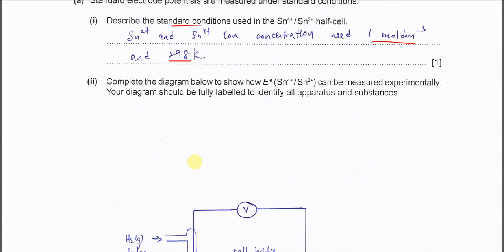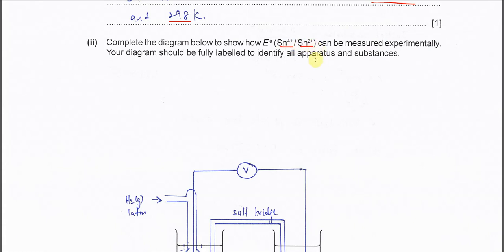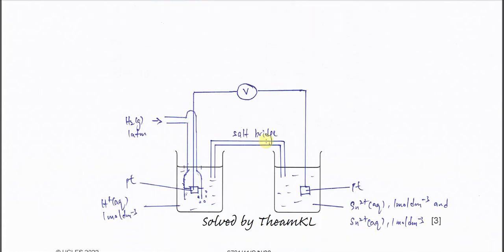Part 2. Complete the diagram below to show how the E0 of the Sn4+/Sn2+ half cell can be measured experimentally. In order to get the electrode potential, we must use the standard electrode potential of hydrogen — the SHE, the Standard Hydrogen Electrode. So the Sn2+/Sn4+ half cell must be connected to the Standard Hydrogen Electrode.